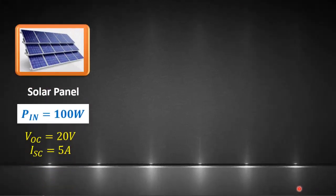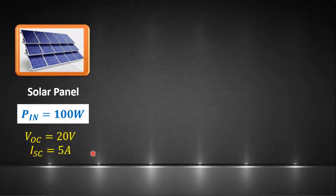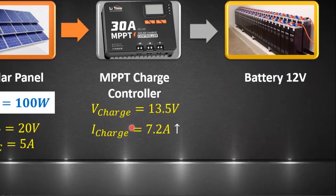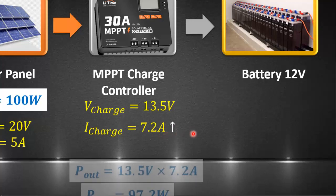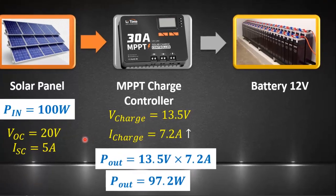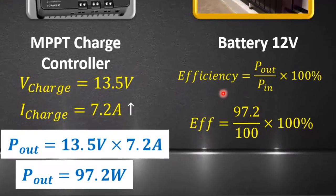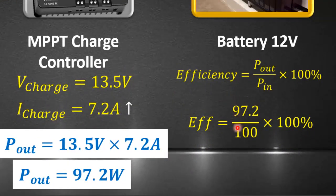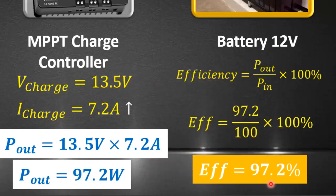Now let's do the same calculations with MPPT. We have the same solar panel of 100 watts. MPPT will charge the battery with 13.5 volts but now with an increased current of 7.2 amperes. The output power will be 97.5 watts, which is almost equal to the input solar power. The power conversion efficiency of MPPT comes out to be 97.5 percent, which is almost 30 percent more efficient than the PWM controller.